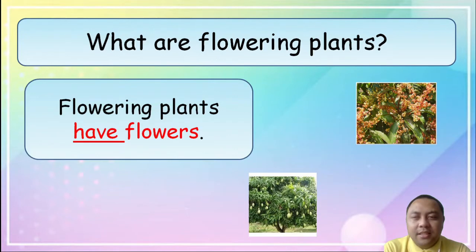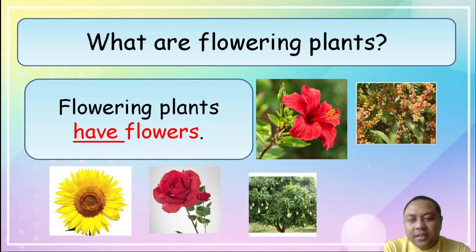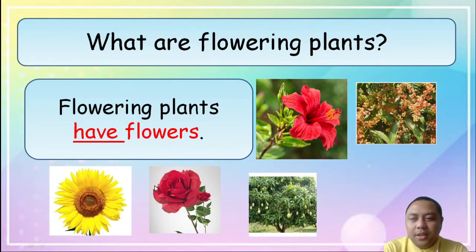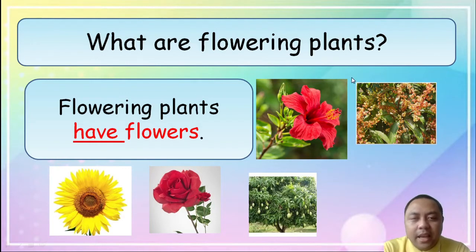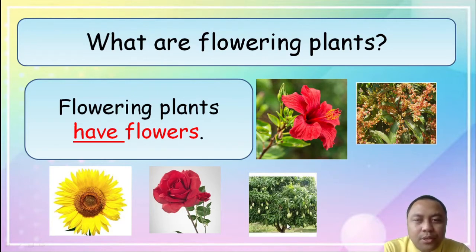What are flowering plants? Flowering plants have flowers. These are different types of plants that have a flower. This one here is a sunflower, this one is a rose plant, this one here is a hibiscus plant, and this one here is a mango tree. Mango trees have flowers also.